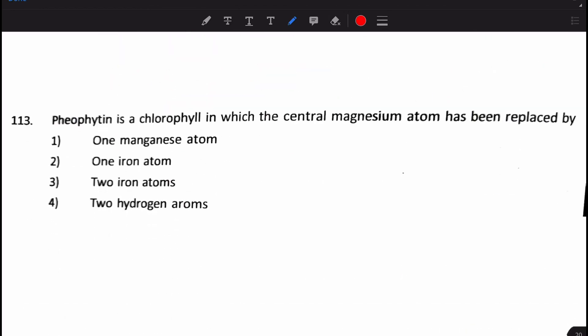Next question. Pheophytin is a chlorophyll in which the central magnesium atom has been replaced by whom? And, they have given 4 options. 1 manganese atom, 1 iron atom, 2 iron atoms, and 2 hydrogen atoms. It's a fact-based question, and we have to know that the answer is number 4, that they are replaced with two hydrogen atoms.